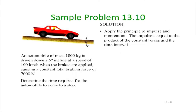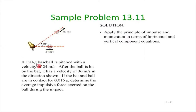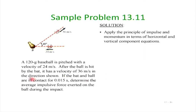Let us discuss a simple problem: a 120-gram baseball is pitched with a velocity of 24 meters per second. After the ball is hit with the bat it has a velocity of 36 meters per second in a direction at 40 degrees with respect to horizontal. We are told that the bat and ball are in contact for 0.015 seconds. Determine the average impulsive force exerted on the ball during the impact.